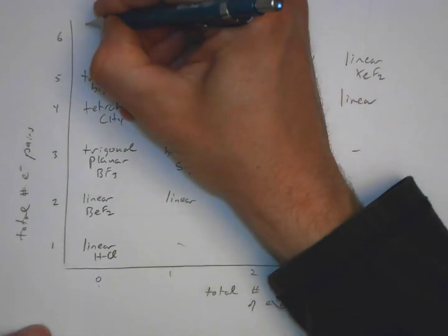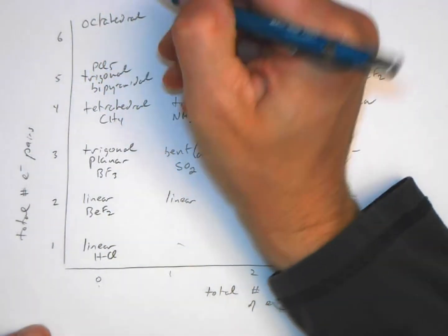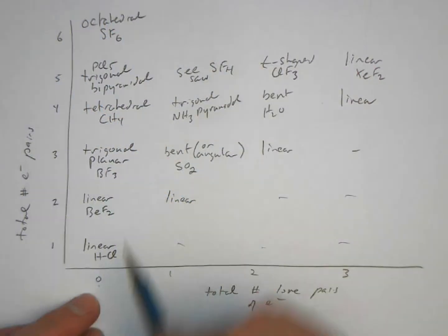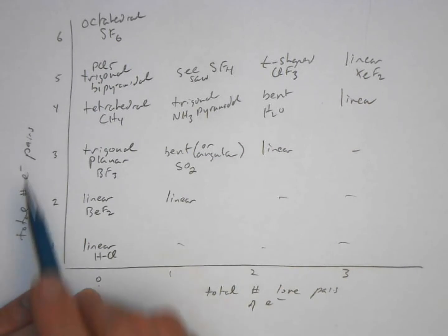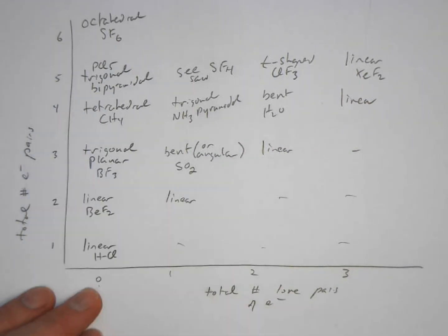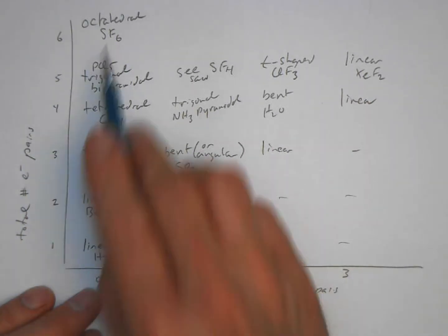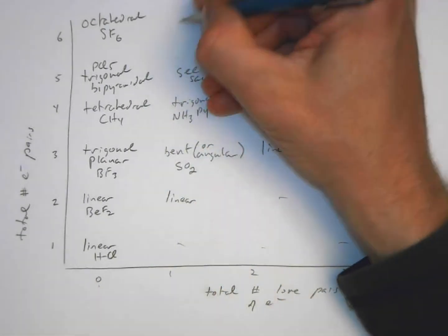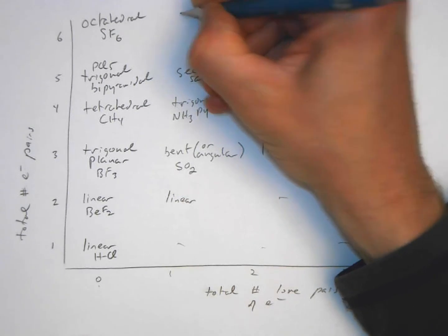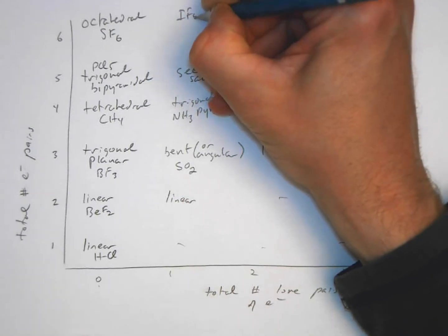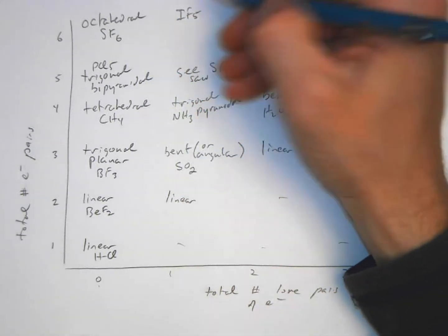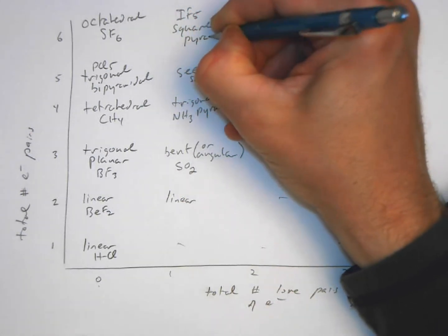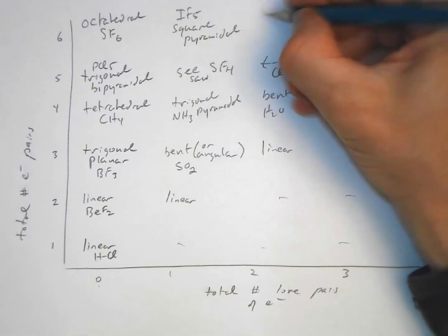Finally, we'd have an octahedral geometry as in SF6, where all six pairs of electrons around the central atom are bonding electrons. It's an octahedral electron pair and molecular geometry. If we make one of them a lone pair, such as in IF5, we have a square pyramidal structure.